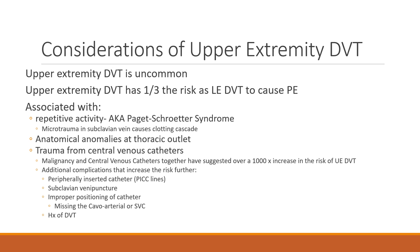Some considerations for the upper extremity: upper extremity DVT is pretty uncommon. However, it's sometimes incorrectly assumed to be completely unlikely — that's a false assumption. Upper extremity DVTs only have about a third of the risk of lower extremity DVTs for causing pulmonary embolism, but they still have significant risk. A physician needs to consider the state of the arm, the patient's risk factors, and whether the patient is demonstrating symptoms of pulmonary embolism.